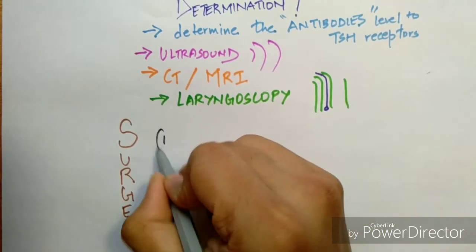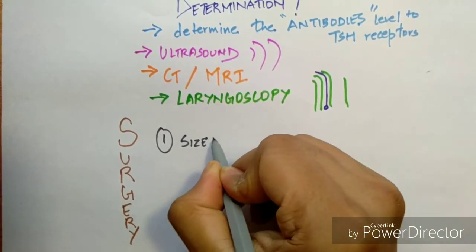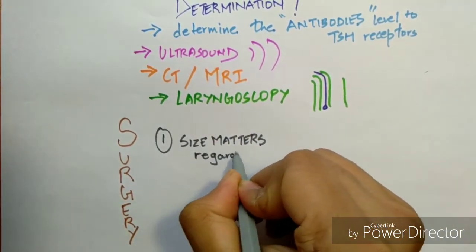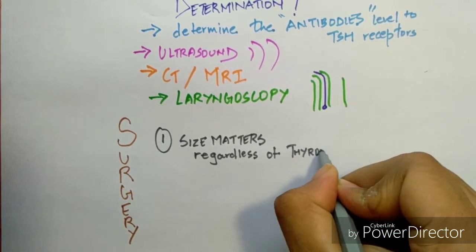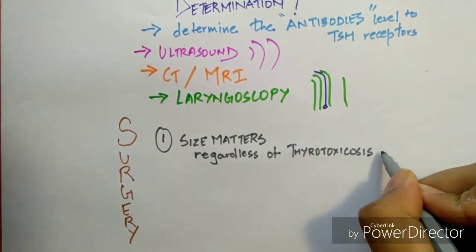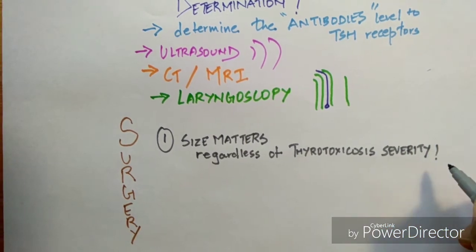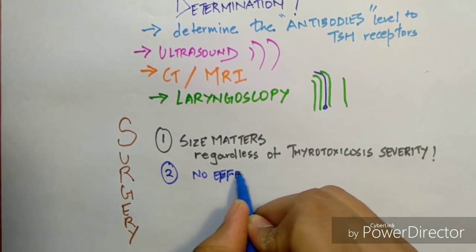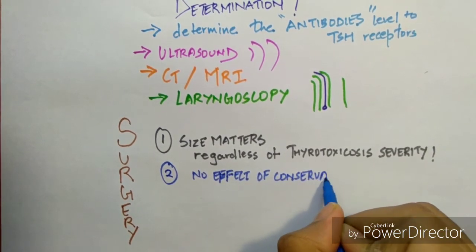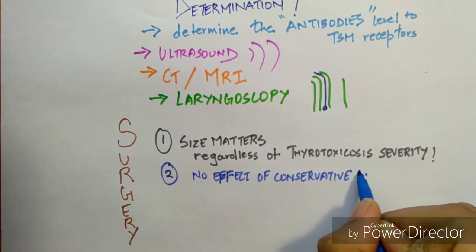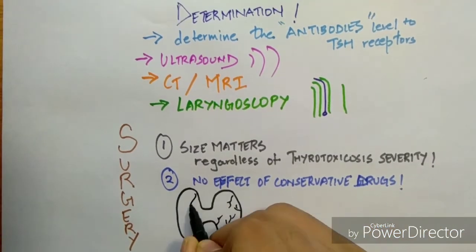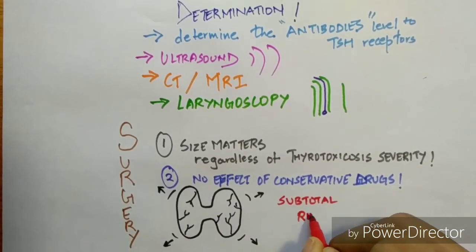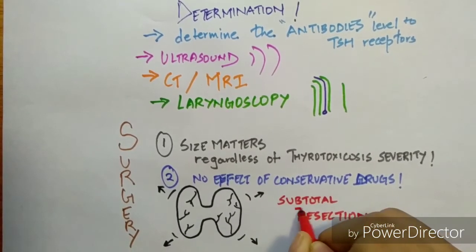The only option available is surgery. To do that, we determine the size, it matters, irrespective of how much thyrotoxicosis is spread throughout the body. And second being absence of conservative treatment, that is drugs are not effective for more than six months. The only option available is subtotal resection, that is complete removal of the thyroid gland.